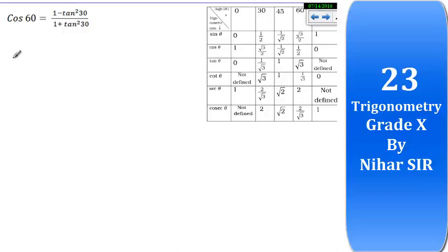Hello friends, let's solve this problem. LHS will be cos 60, and cos 60 equals 1 upon 2.